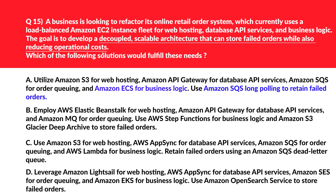This question is related to EC2 decoupling. Option A: utilize Amazon S3 web hosting, Amazon API Gateway for database API services, Amazon SQS for ordering queue, and Amazon ECS for business logic; use SQS long polling to retain failed orders. Amazon ECS is more complex than AWS Lambda for business logic and may not minimize operational cost. Also, SQS long polling is less effective than a dead letter queue for retaining failed orders — incorrect.